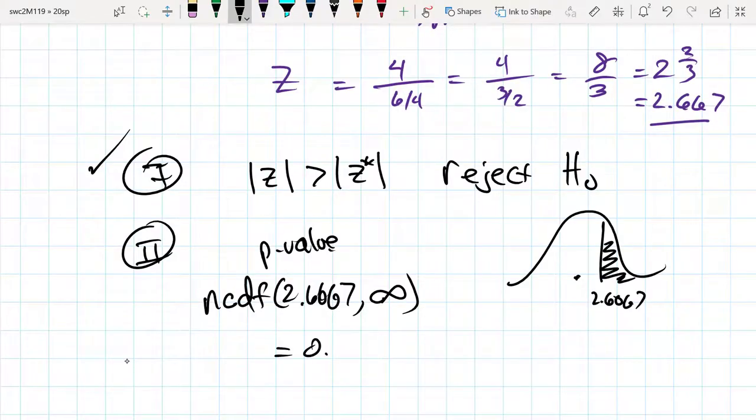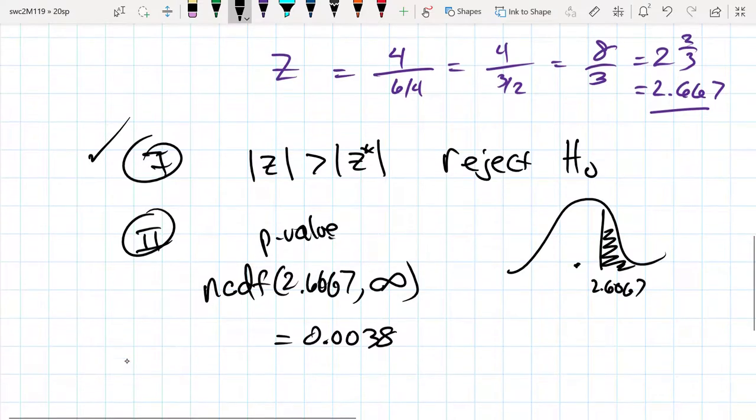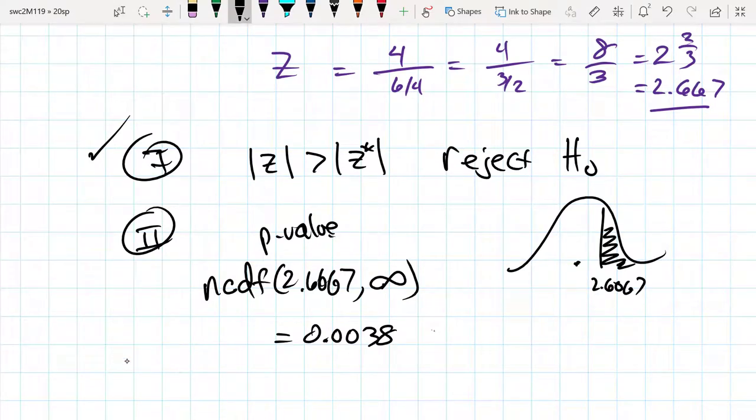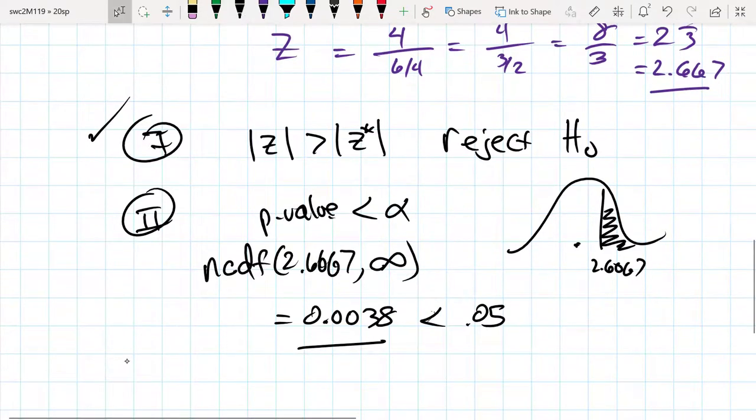So 0.0038, which is indeed the p-value, is less than α, which is less than 0.05. That's improbable enough as far as happening by chance for us to reject the null hypothesis.